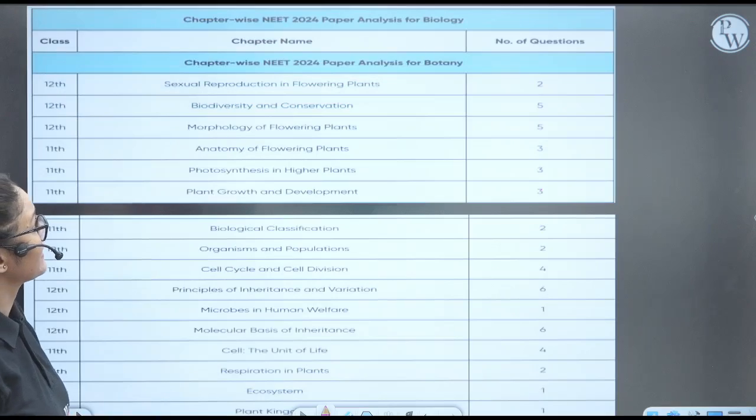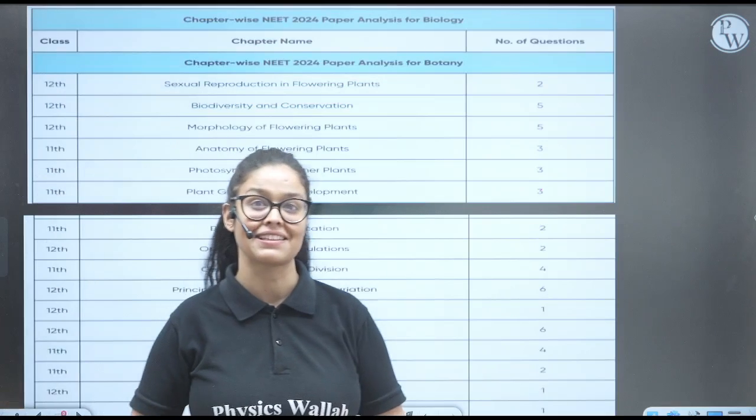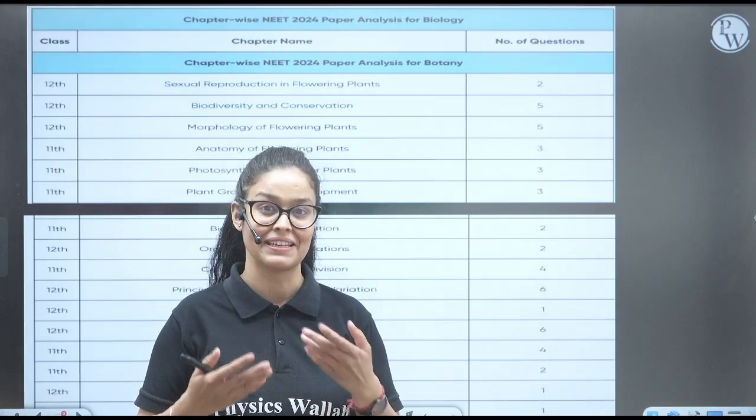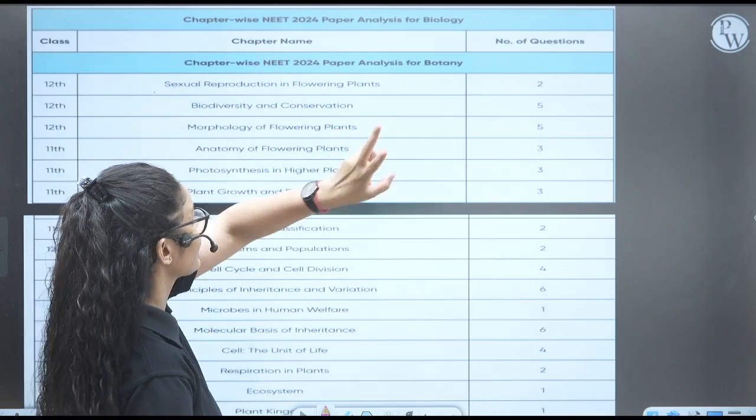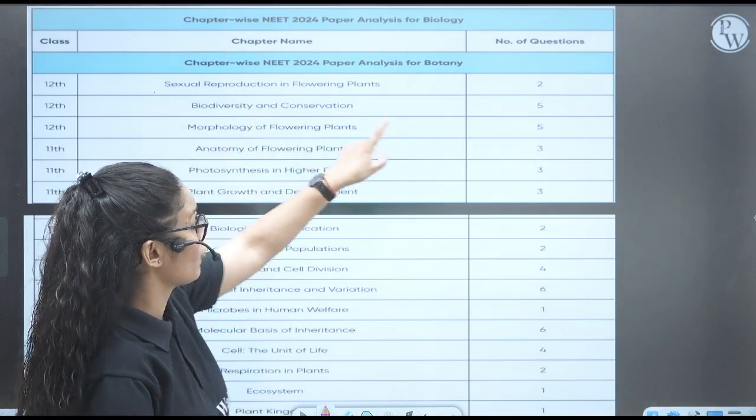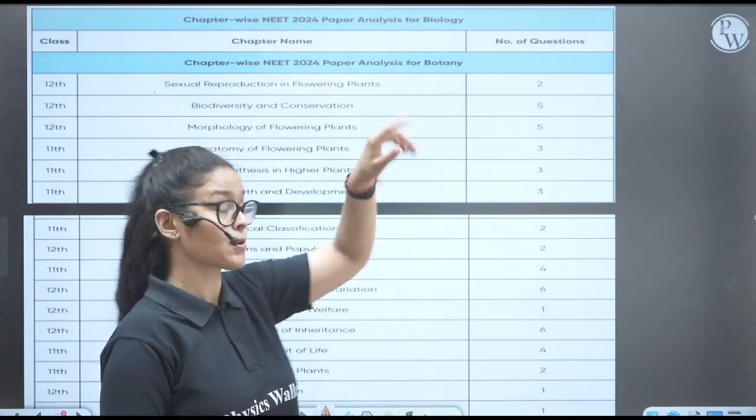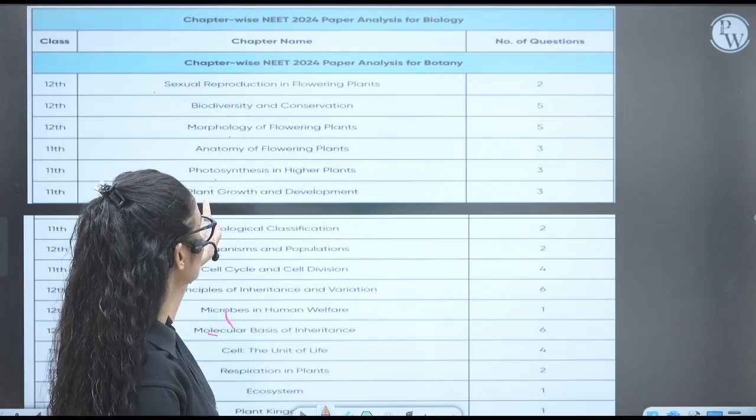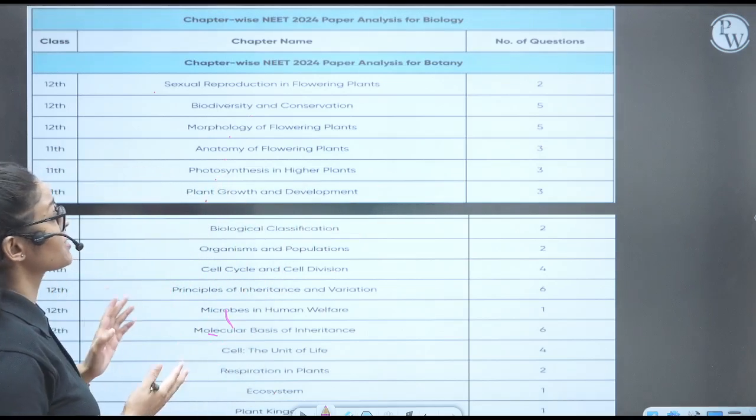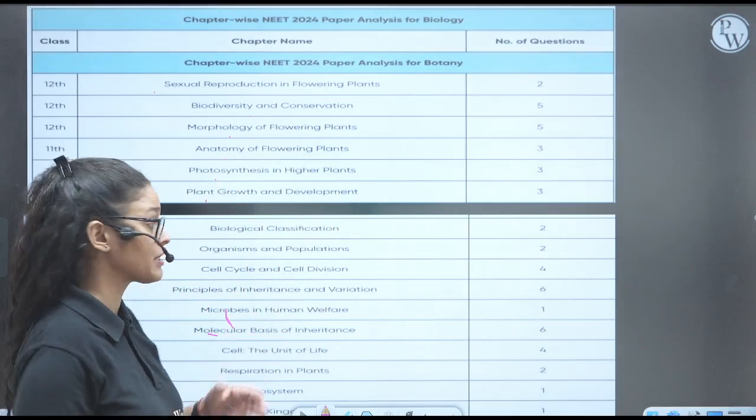Now let me take you ahead. Let's see the chapter-wise analysis of the questions in Biology first. So first chapter is Sexual Reproduction, Flowering Plants, they have asked two questions. Biodiversity and conservation, five. This chapter was so important. Morphology, five. Anatomy, three. Photosynthesis, three. Growth and Development, three. Many questions from the plant physiology itself.